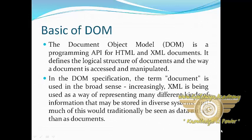Let's see the basics of DOM. The Document Object Model is a programming API for HTML and XML documents. It defines the logical structure of documents and the way a document is accessed and manipulated. In the DOM specification, the term document is used in the broad sense. Increasingly, XML is being used as a way of representing many different kinds of information that may be stored in diverse systems, and much of this would traditionally be seen as data rather than as documents.